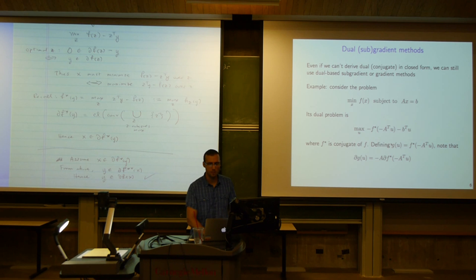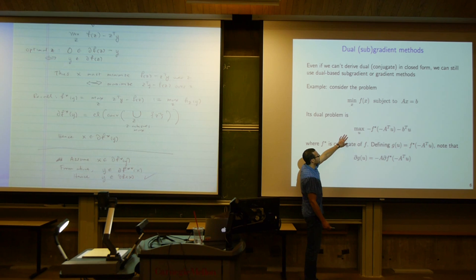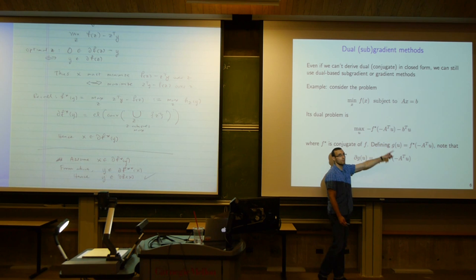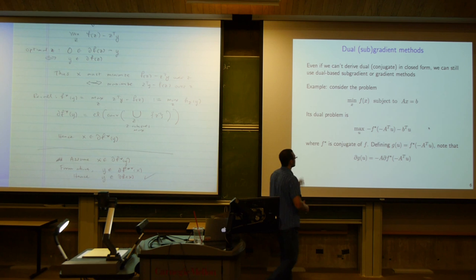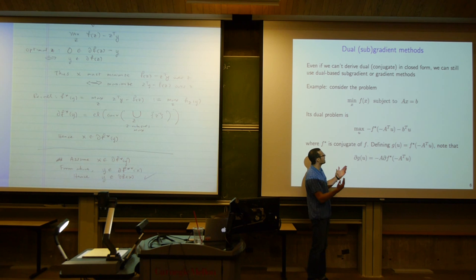As an example, consider minimizing f of x subject to Ax equals b, assuming strong duality. The dual problem is to maximize over u the negative conjugate of f evaluated at minus A-transpose u, minus b-transpose u — where f-star is the conjugate of f. Suppose we don't know f-star explicitly but still want to optimize the dual.